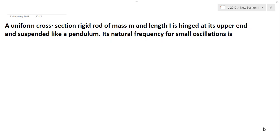Hello friends, I am Samad. I am going to solve GATE Aerospace Mechanical Vibration questions which were asked in 2010, and this question has been organized by IIT Guwahati. So the first question of this is: a uniform cross-section rigid rod of mass m and length l is hinged at its upper end and suspended like a pendulum.